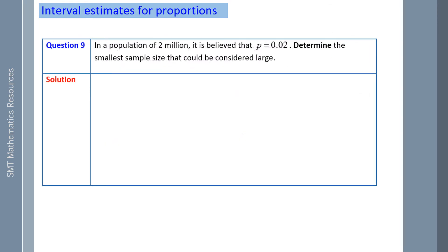Question 9: In a population of 2 million, which is capital N, it is believed that P is 2%. Determine the smallest sample size that could be considered large. A sample needs to fulfill the following criteria.